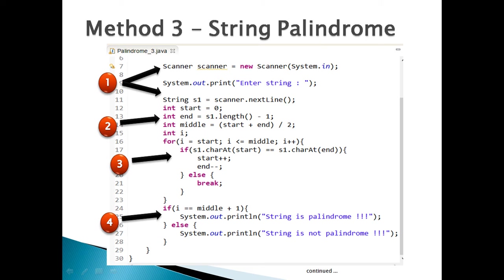Method 3: In the main method of the Demo class, step 1 — create a Scanner object scanner = new Scanner(System.in), importing Scanner class first. The Scanner reads values from the console via System.in. Prompt the user with System.out.print("Enter a string"), then create String variable s1 assigned via scanner.nextLine().